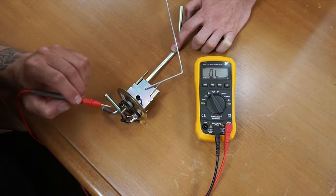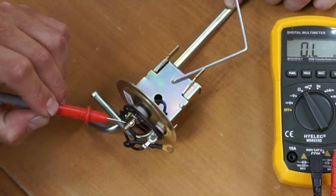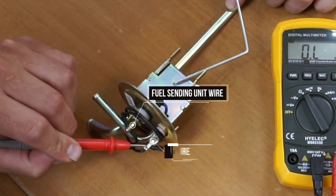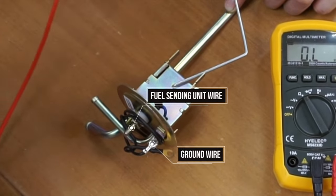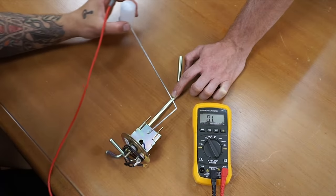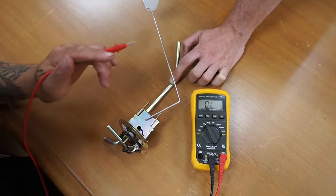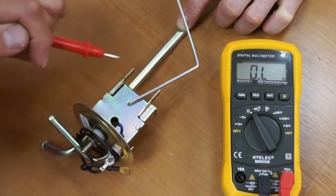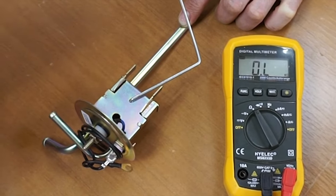To start off, we're going to use the terminal for the sending unit wire and the ground wire. How this is going to operate is as the float goes up and down, the ohm readings are going to change. You can adjust this by simply bending these tabs in or out to get your desired ohm reading.